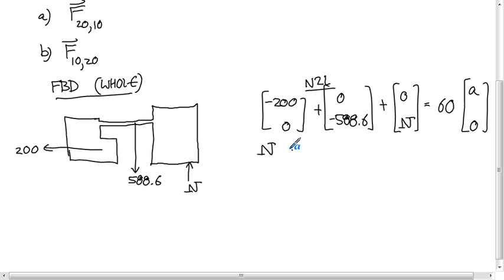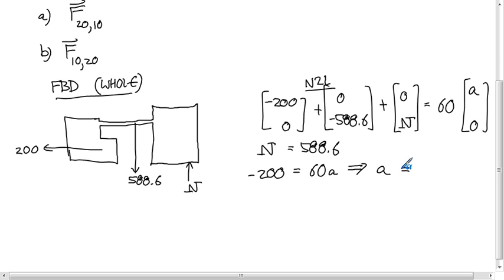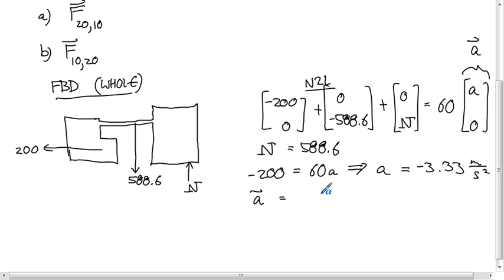For the whole system: the 200 Newton force gives components negative 200, 0 (pointing left). The normal force N acts upward. Newton's Second Law gives: from the y-equation, N equals 588.6 Newtons; from the x-equation, negative 200 equals 60A, so A equals negative 3.33 meters per second squared. The acceleration vector is therefore negative 3.33 meters per second squared, 0.